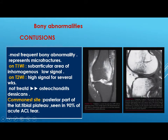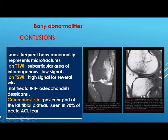The most common bony abnormality in the knee is contusion, which represents microfractures. It should be mentioned because it may end up with osteochondritis dissecans, and treatment is decreased weight bearing. On T1 there is a subarticular area of inhomogeneously low signal; on T2 there will be high signal for several weeks. The common site is the posterior lateral tibial plateau, seen in 90 percent of acute ACL tears.